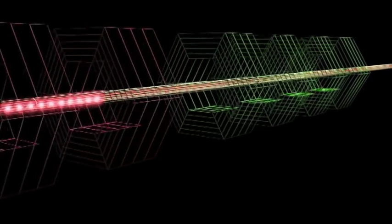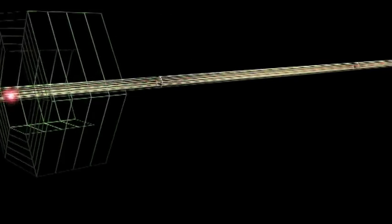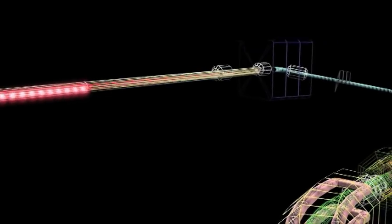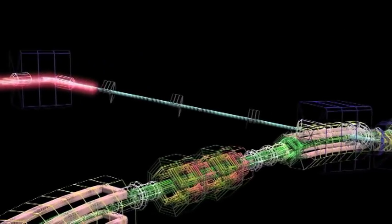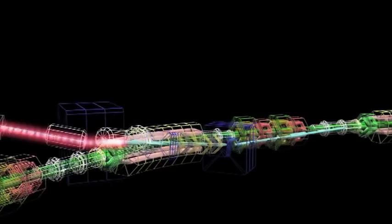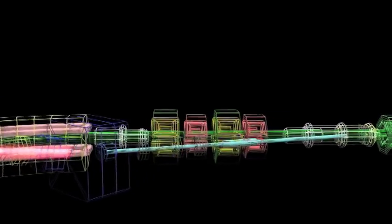This accelerates the ions and focuses them, like an optical lens, for entry into the second accelerator, a LINAC. The LINAC accelerates the ions up to 35% of the speed of light.